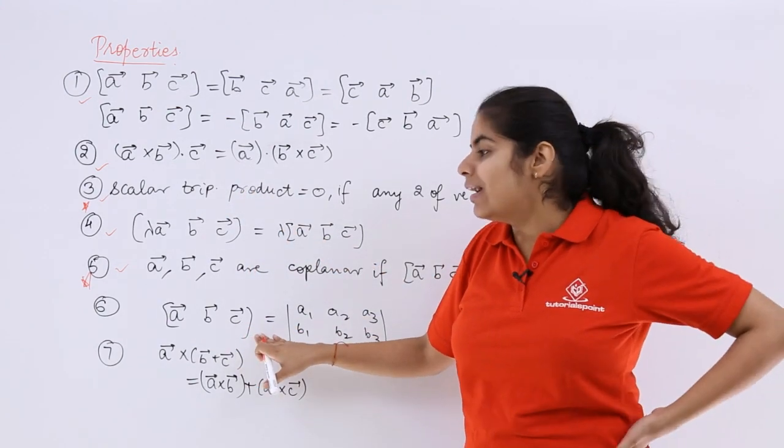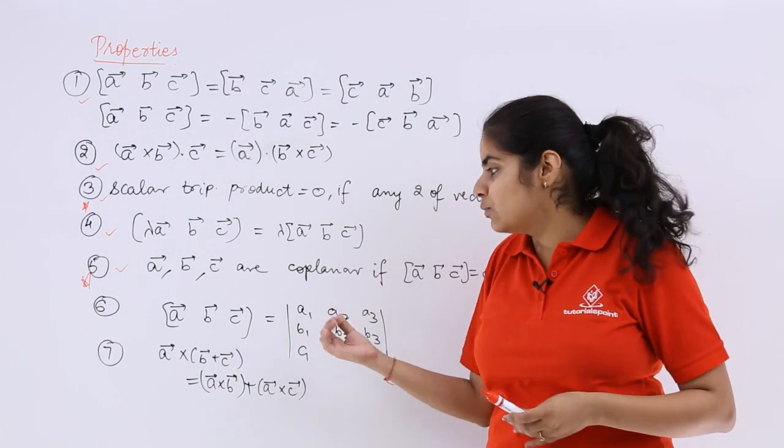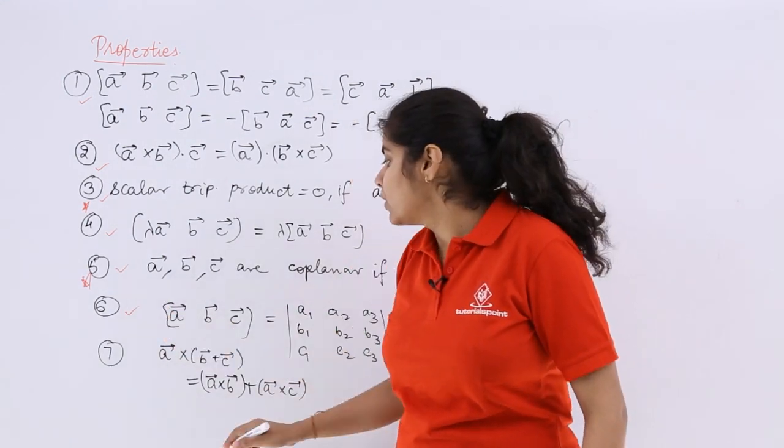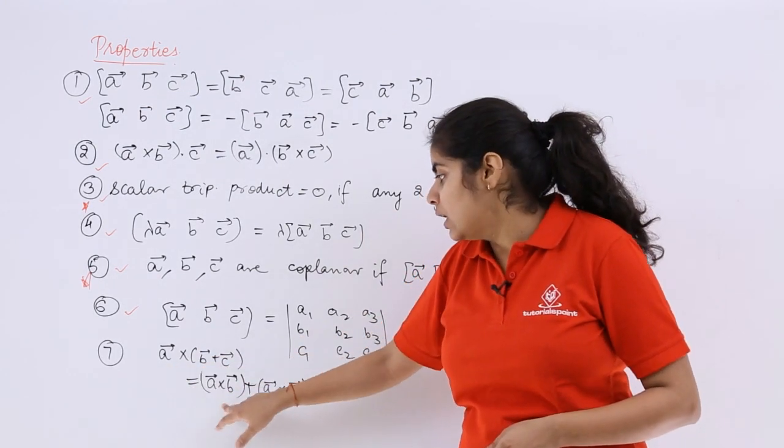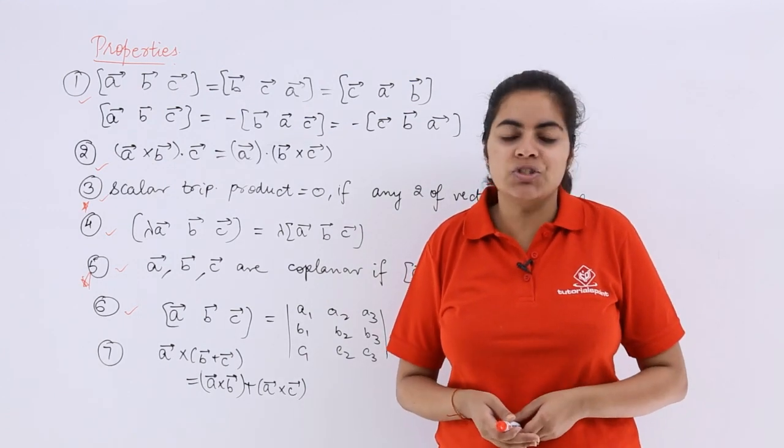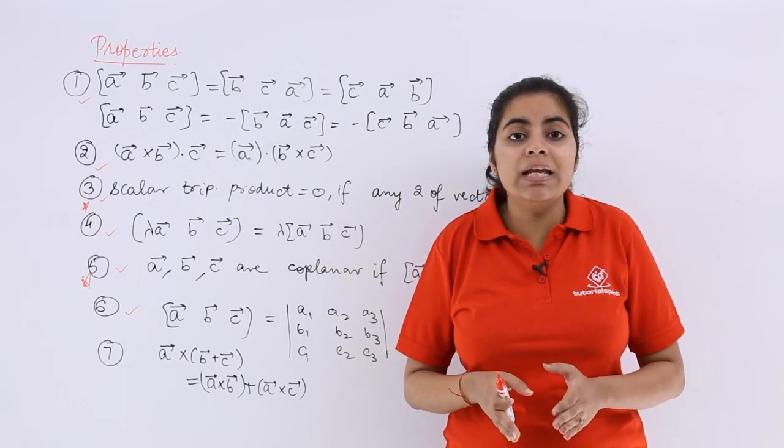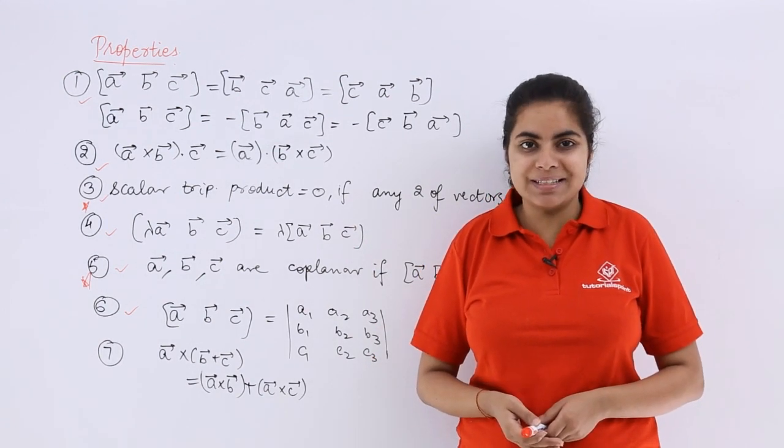Next, if you have to evaluate the components of the scalar triple product, they will be in the determinant form like this. You can always evaluate them on your own. And last but not least is the distributive property - that means A cross B plus A cross C can be evaluated in the case of the scalar triple product. So these are the properties, and these properties are important in order to understand things much better.